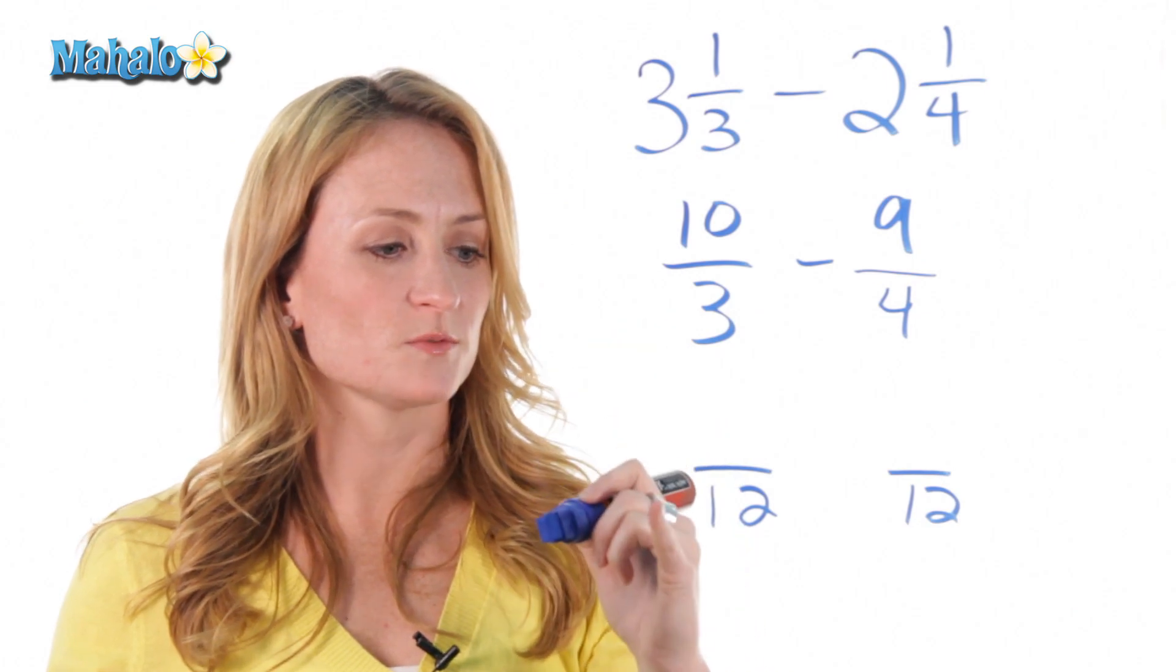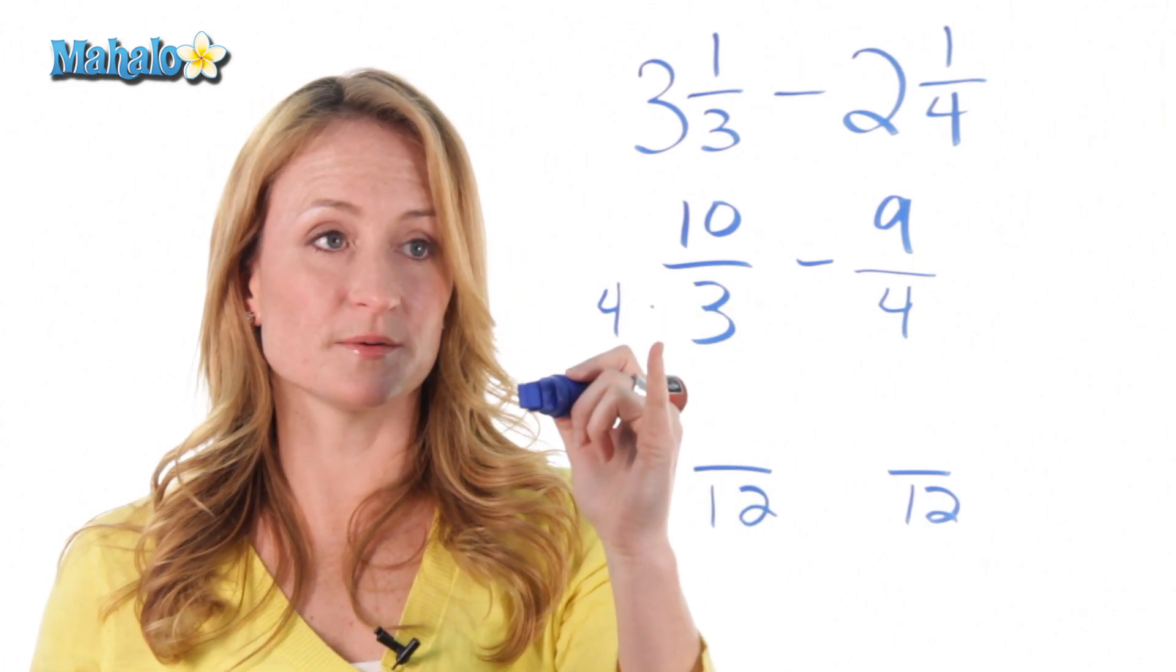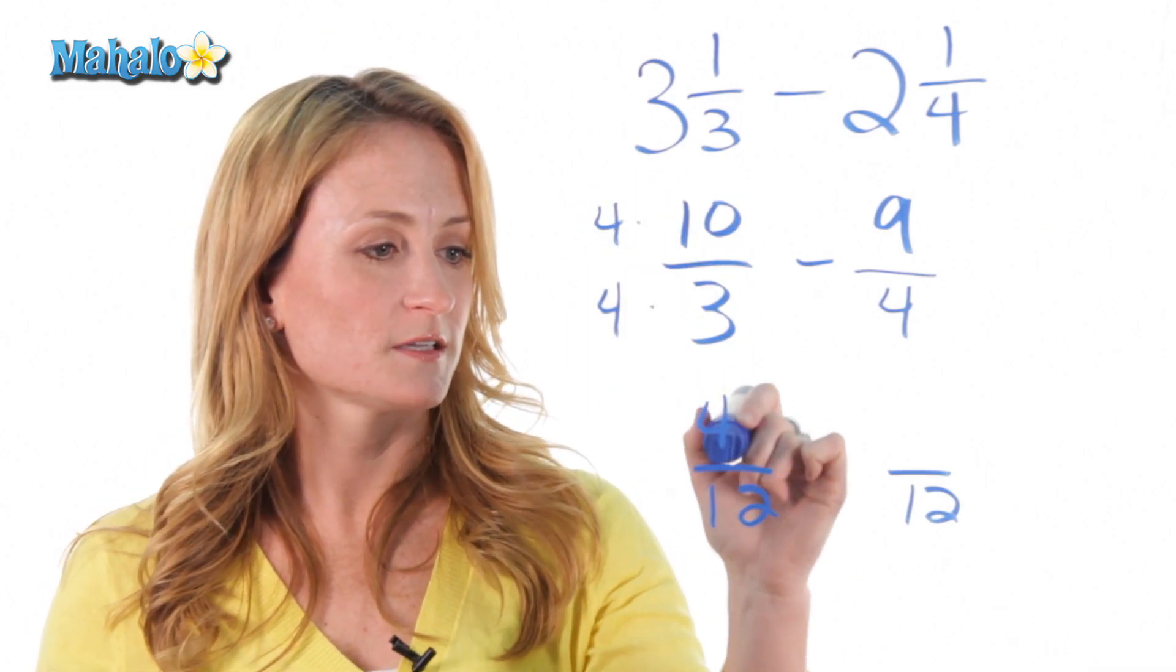So, how did I turn this 3 into a 12? I multiplied it by 4. And remember, what you do to the bottom, you need to do to the top. So, we're going to multiply that times 4. 4 times 10 is 40.